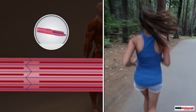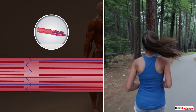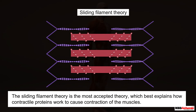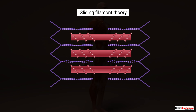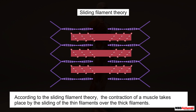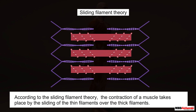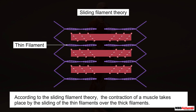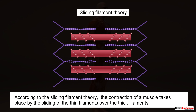The sliding filament theory is the most accepted theory which best explains how these proteins work to cause contraction of the muscles. The theory states that contraction of a muscle takes place by the sliding of the thin filaments over the thick filaments.